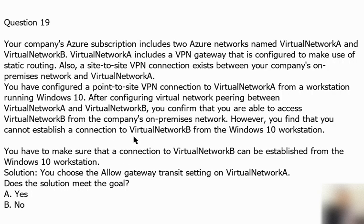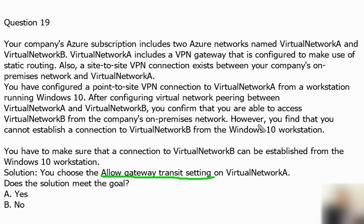You have to make sure that a connection to Virtual Network B can be established from the Windows 10 workstation. This is a lengthy and puzzling question. The proposed solution is to choose the 'Allow Gateway Transit' setting on Virtual Network A. We need to determine whether this solution fully meets the goal. Let's create a diagram to understand.